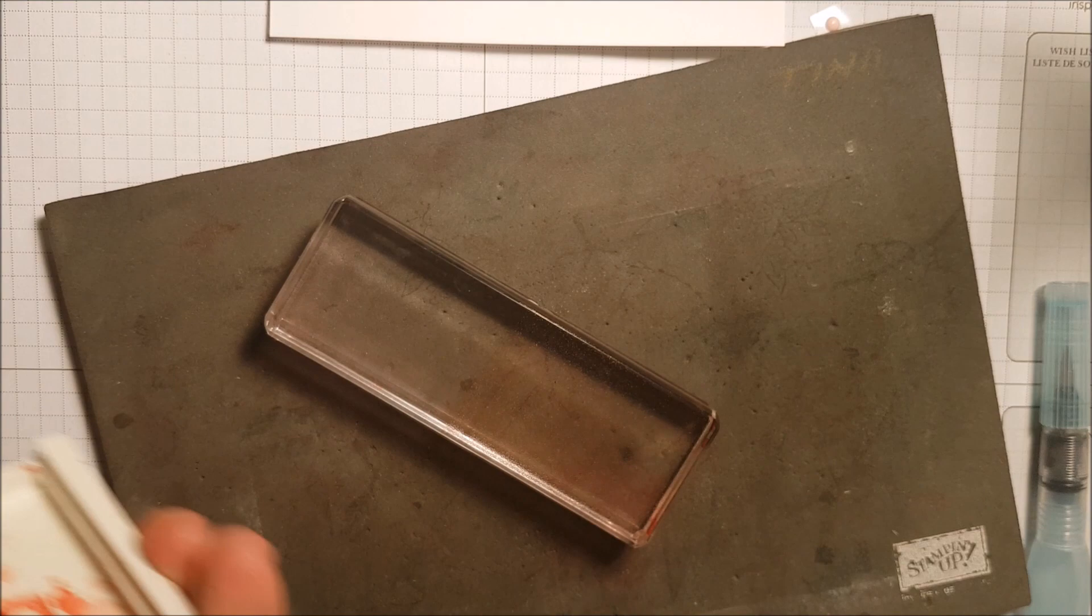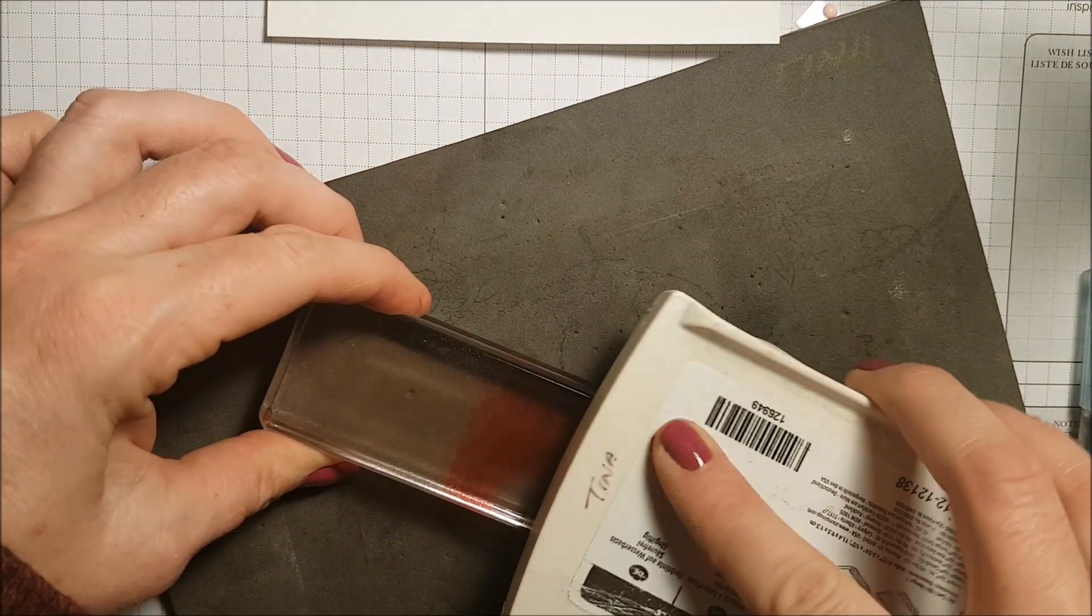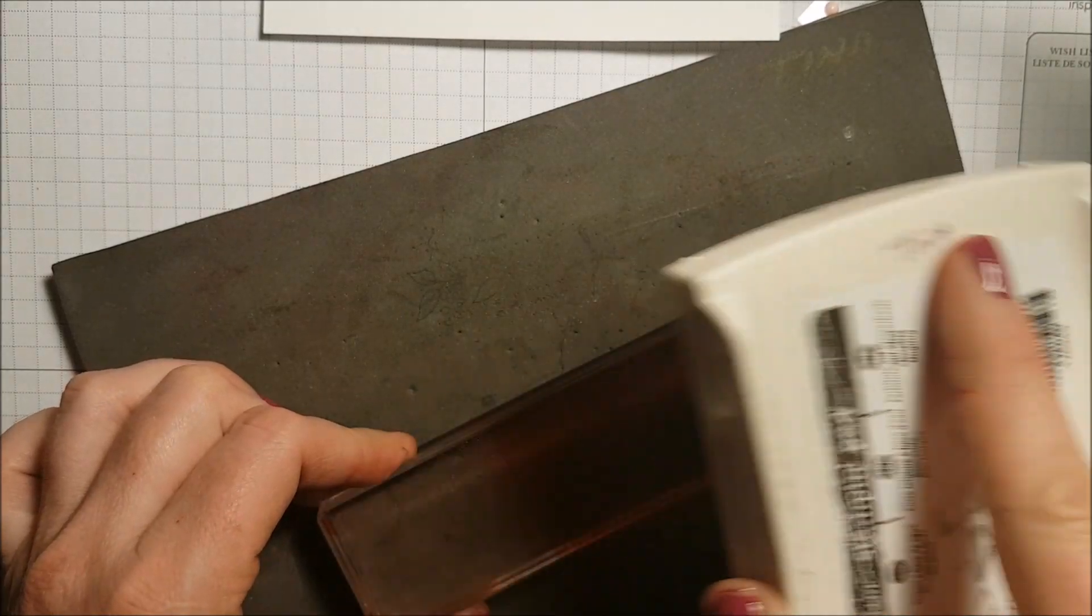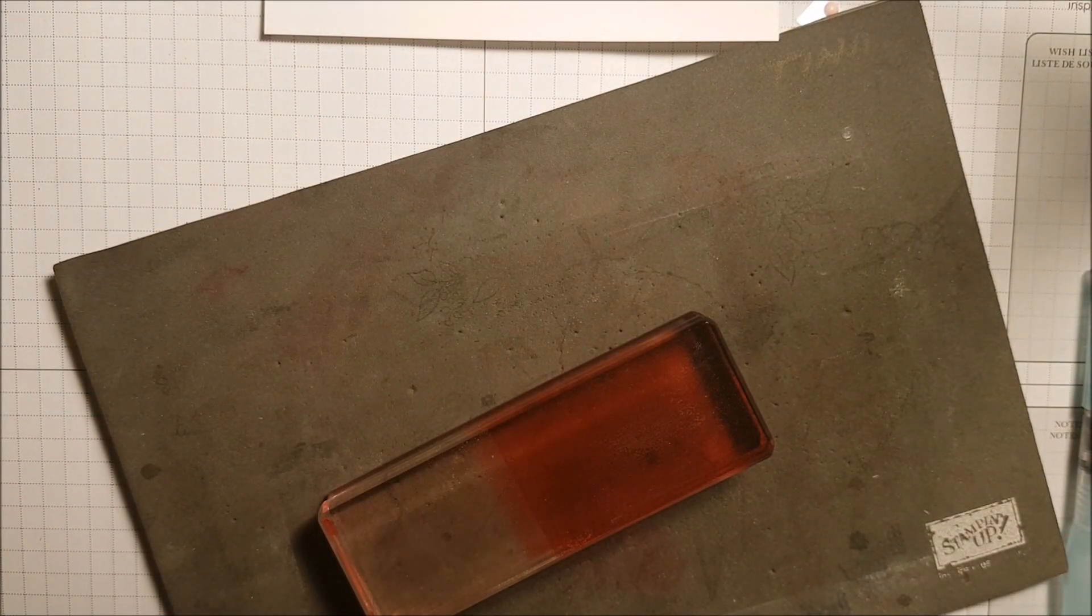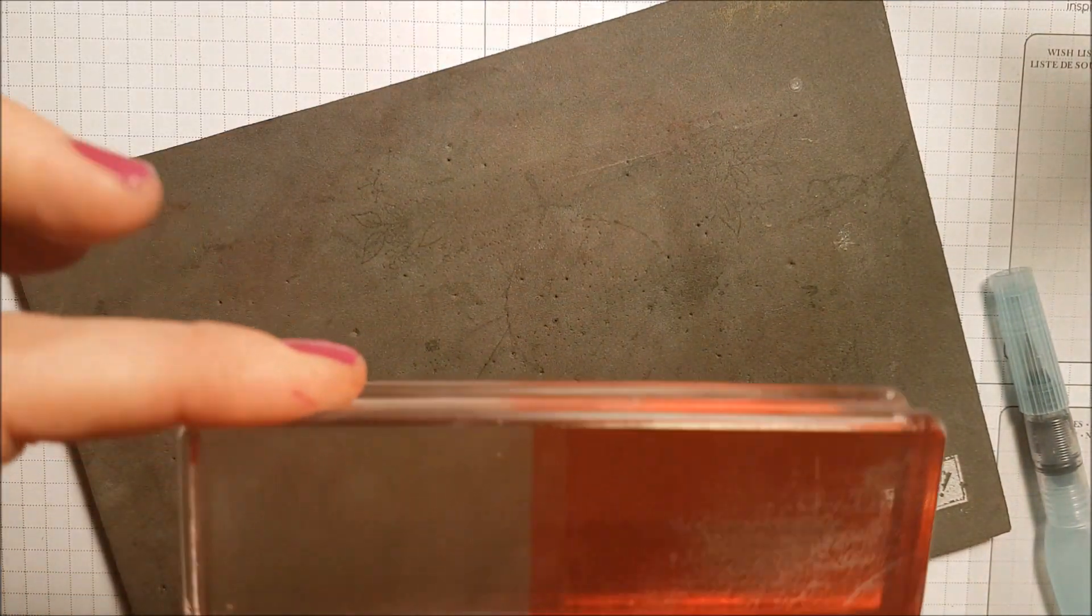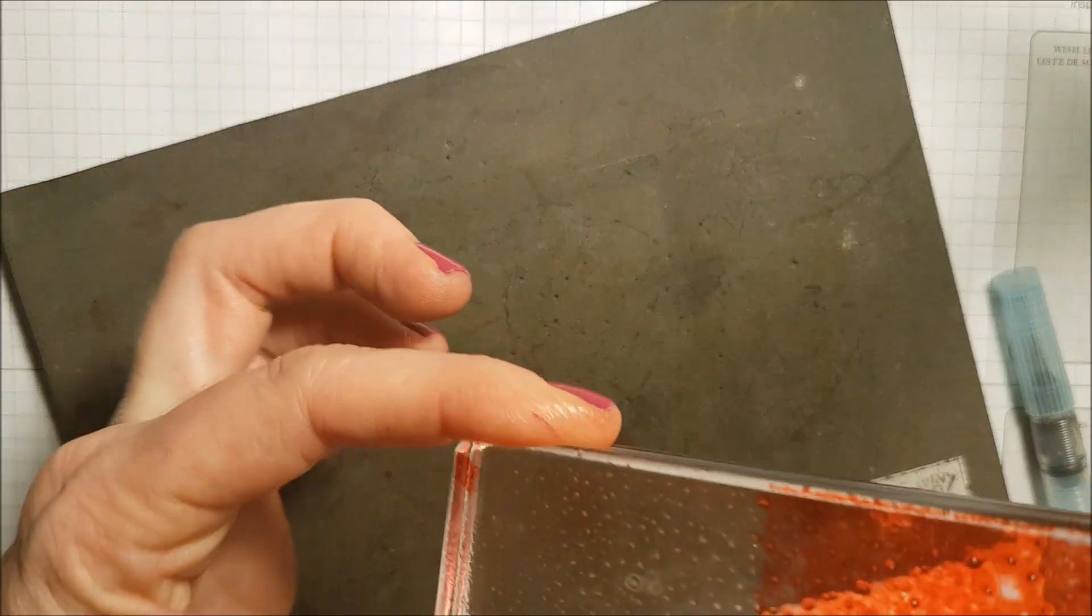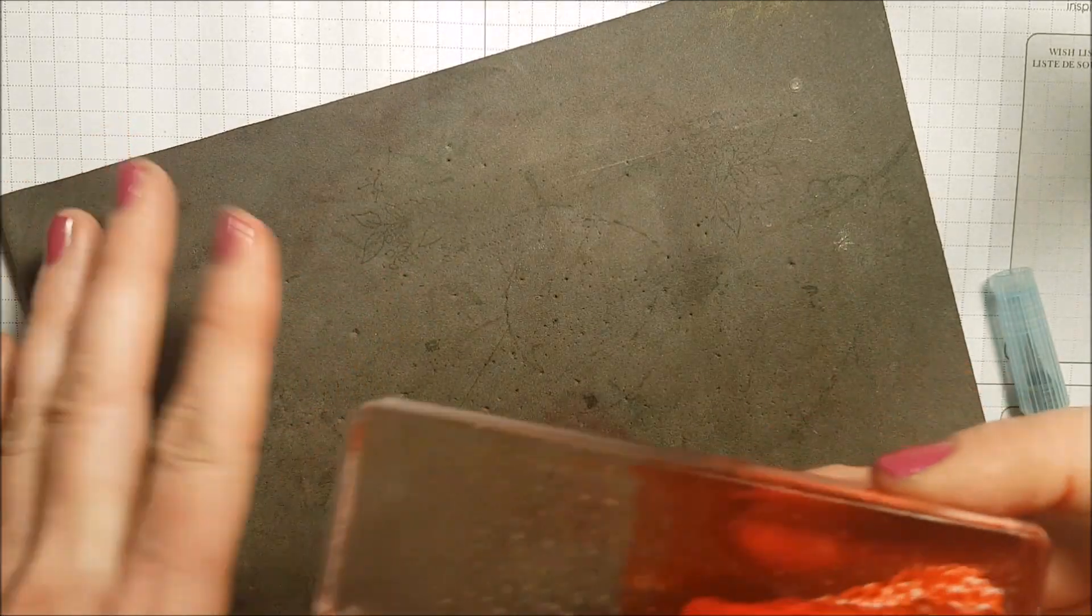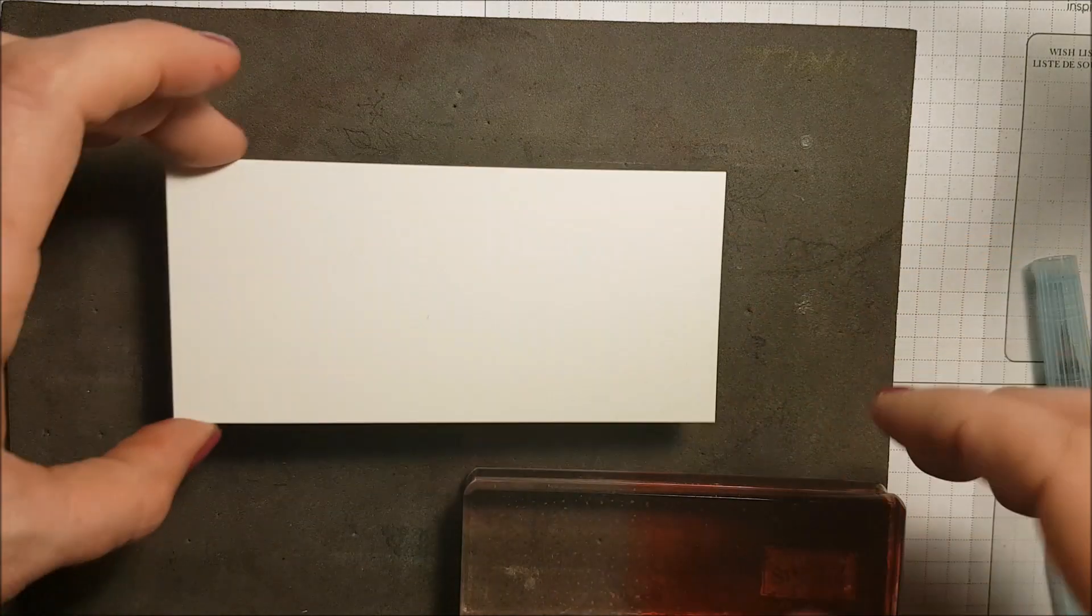Now I'm taking my real red and I'm going to do it on the other end. I'm going to move my paper out of the way, I don't want to spritz it. I'm going to lightly spritz this with water and kind of let it do its thing a little bit here.